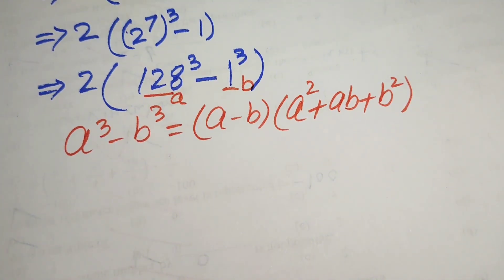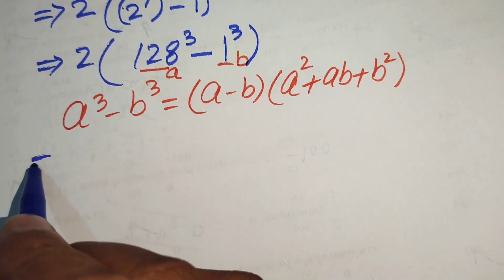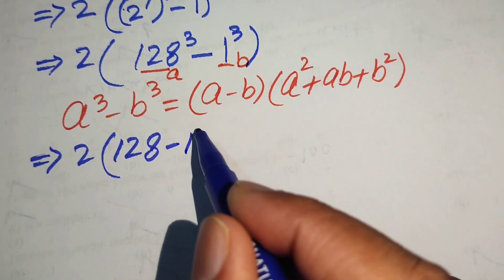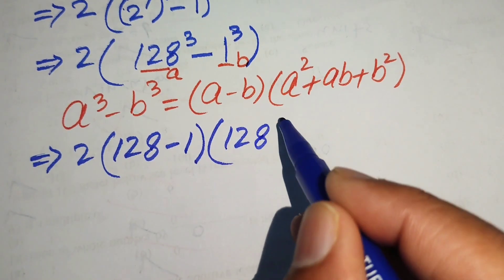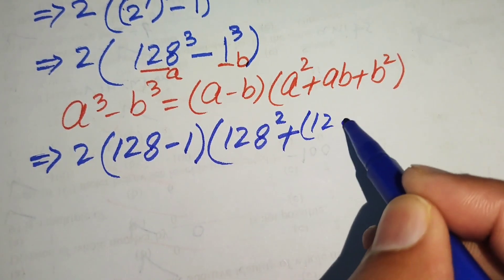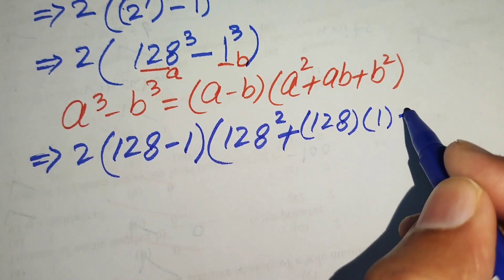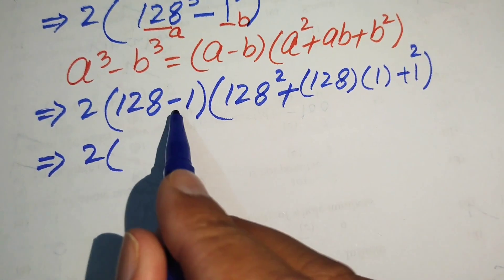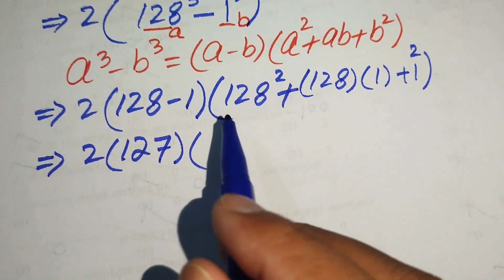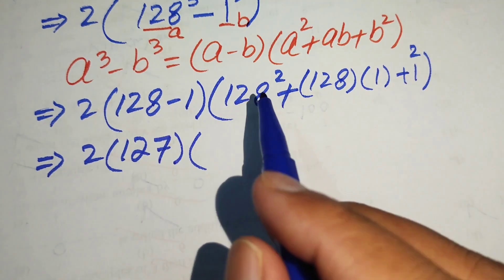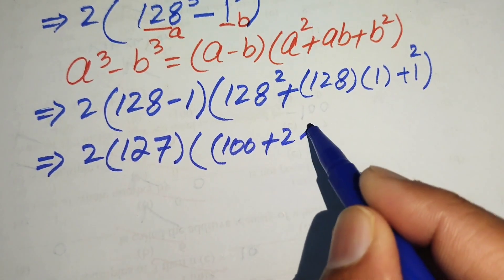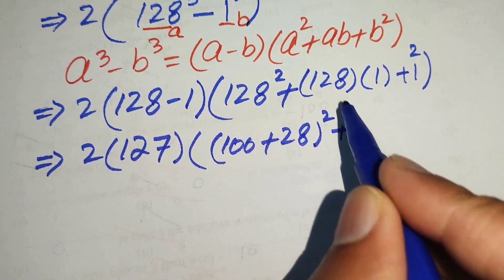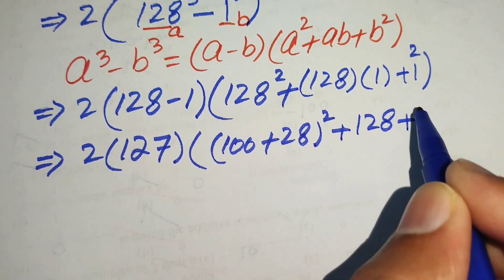The value of a is 128 and b is 1. Substituting into the cubic formula: we get 128 minus 1, times 128 squared plus 128 times 1 plus 1 squared. Simplifying, this becomes 127 times 128 squared plus 128 plus 1. We break 128 as 100 plus 28 for its square, and 128 times 1 gives 128, plus 1 squared equals 1.